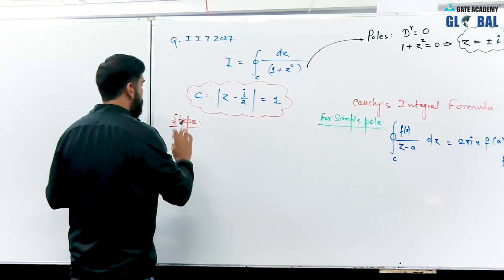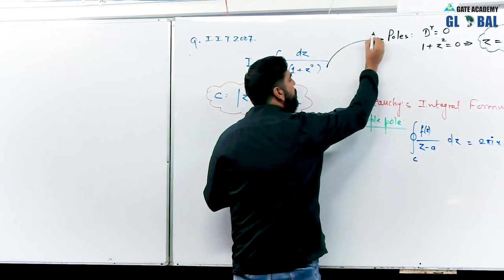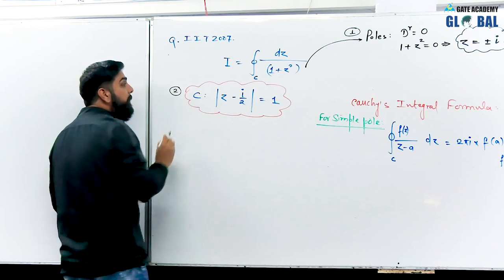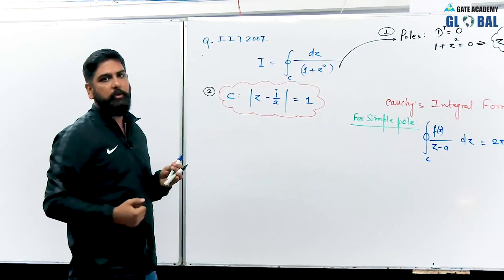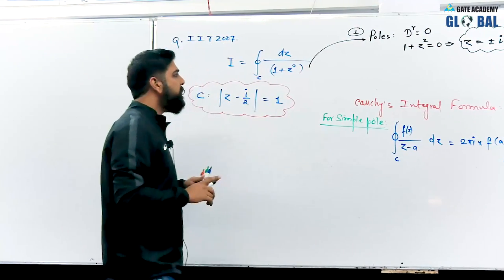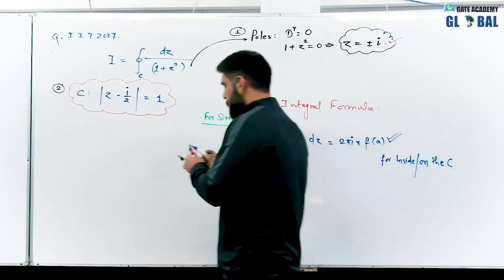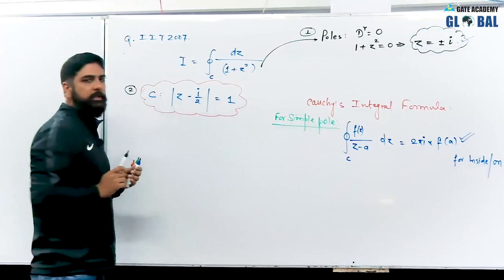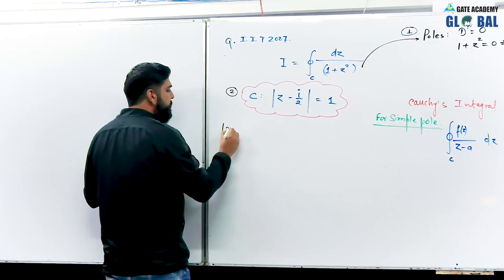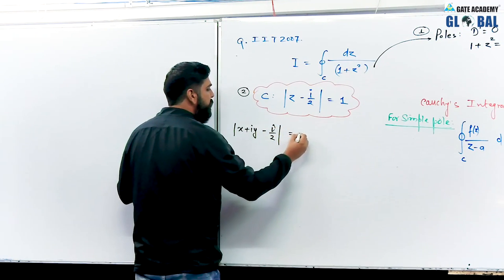Step number 2 is the contour or curve. We have the closed curve. Here z is a complex number x plus iy, so the contour mod of z minus i by 2 equals 1 gives us: real part x, imaginary part y minus half, and mod equals 1. So we have root of x square plus y minus half square equals 1. This is a circle: x square plus y minus half square equals 1.